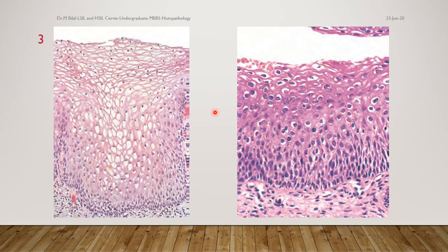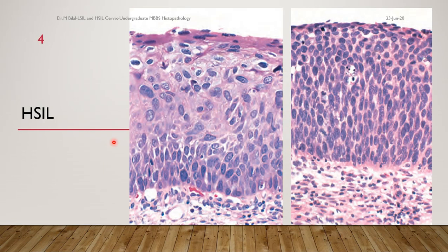As the changes progress, they are termed HSIL. When we say progression here, you can see the changes have gone towards the basal portion and mid portion in this photomicrograph. The changes of atypia, dysplasia, nuclear enlargement, and hyperchromasia have gone down to the basal layer as well.